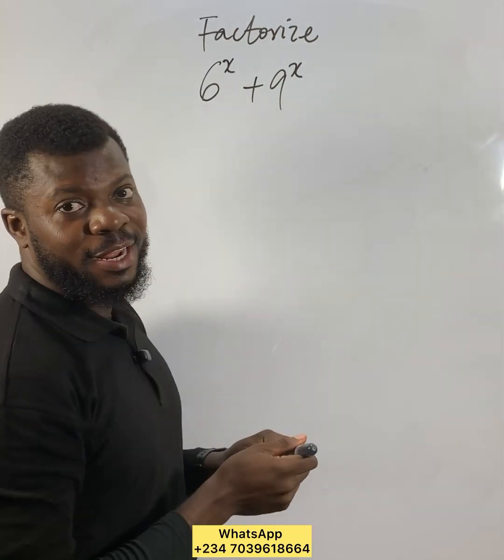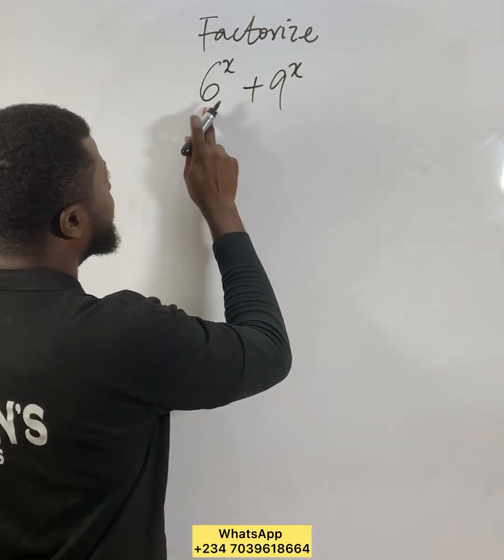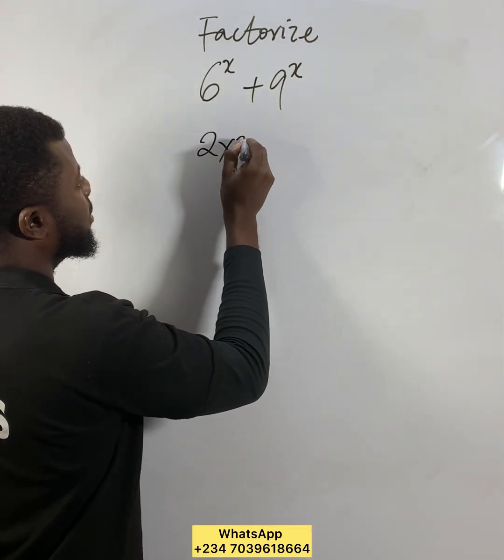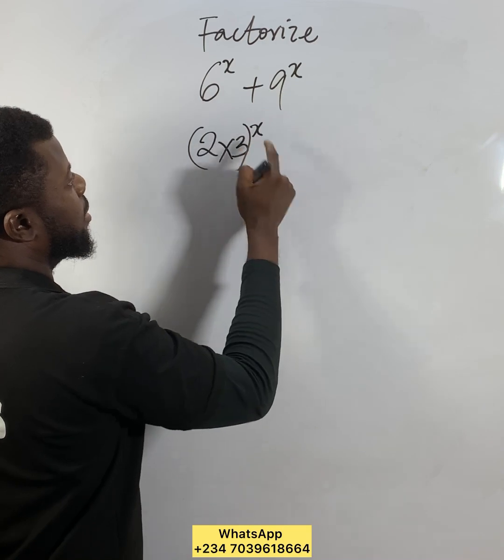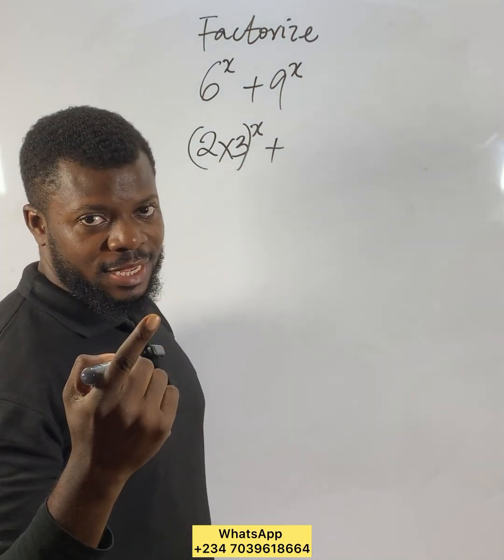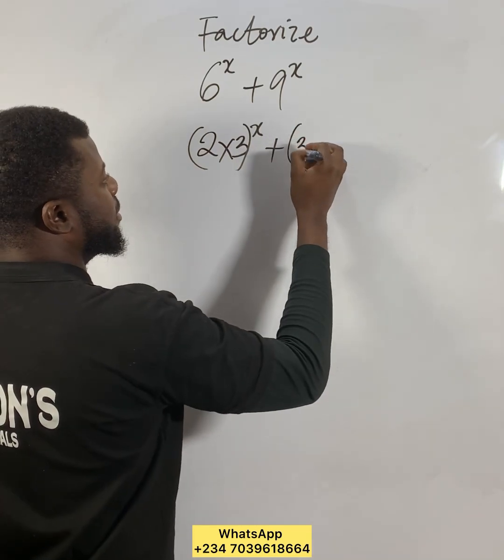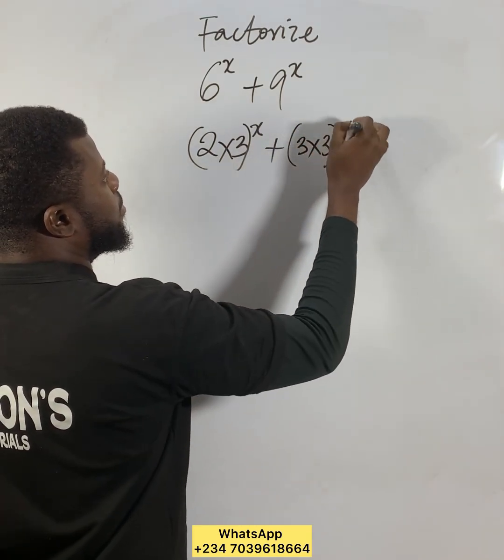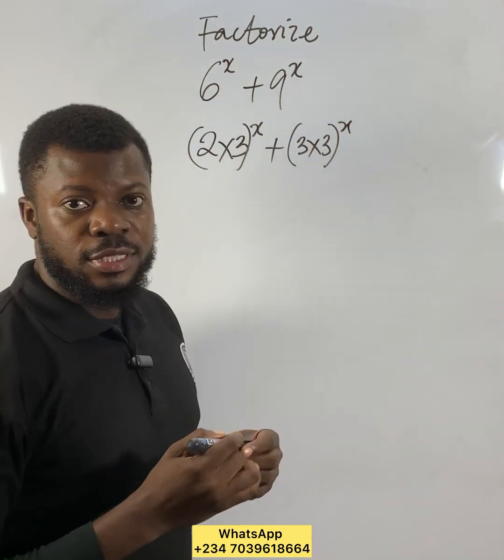You can write it another way. Let me show you. This 6^x, you can say is (2×3)^x, plus this 9^x here. Now you understand the idea - 9 is 3 times 3, so 9^x is (3×3)^x.